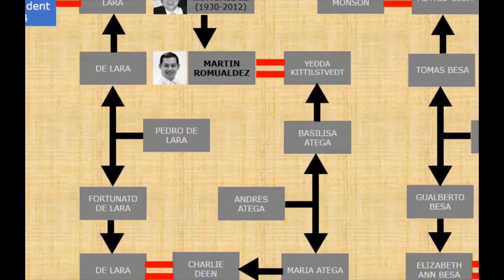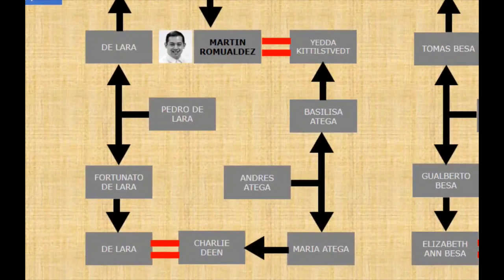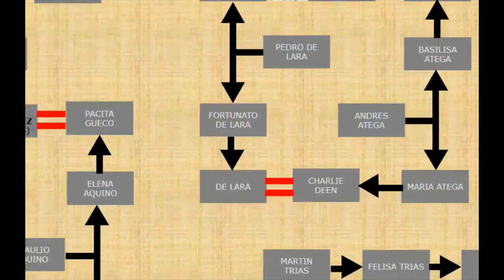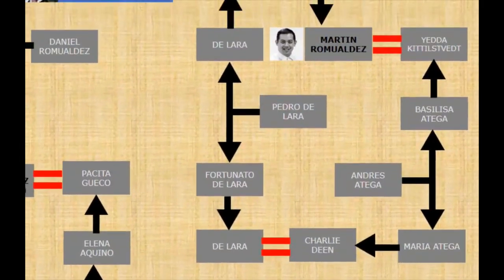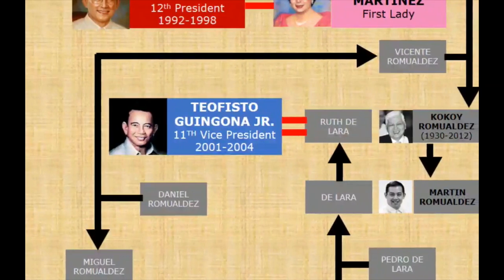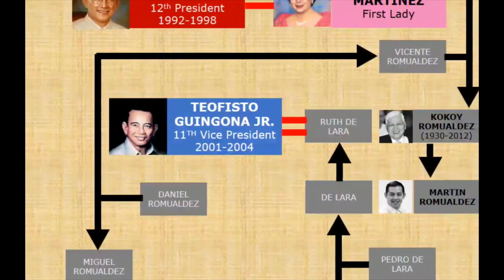If we trace her line, we can see that her mother, daughter of Andres Attega, had a sister by the name of Maria Attega, who would marry into the Dean Dallara family. The Dallara family would produce one Ruth Dallara, who married Teofisto Guingona Jr., who was the 11th vice president of the Philippines. Teofisto Guingona was appointed as vice president and secretary of foreign affairs by President Gloria Macapagal Arroyo, and has the distinction of being the only vice president who was not nationally elected to the position.